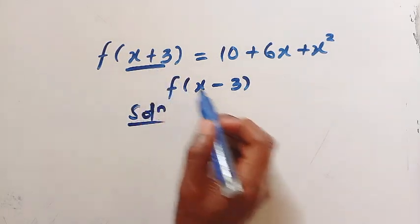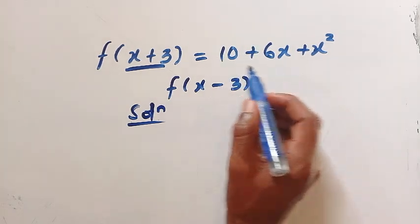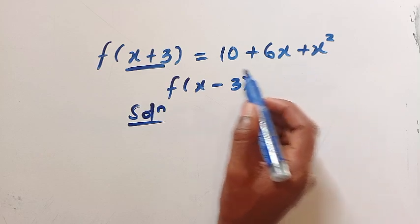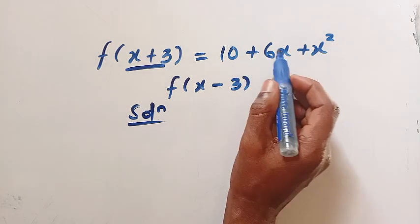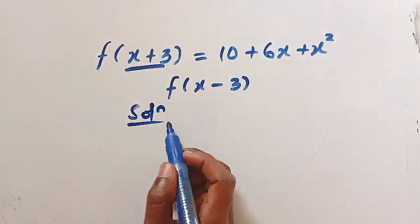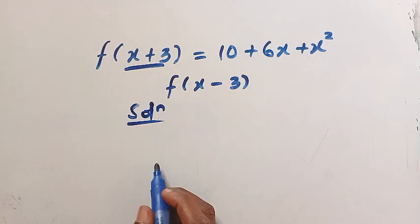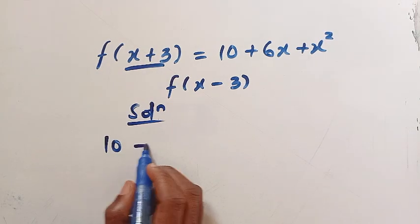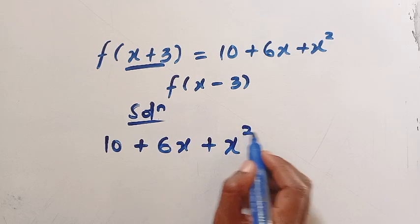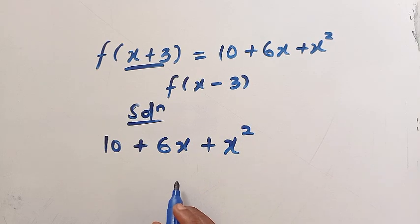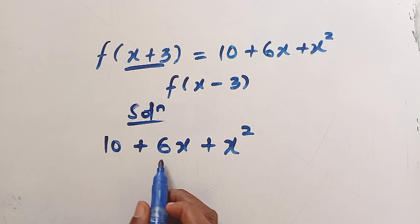Looking at the right-hand side, we have a quadratic — we have the power of 2 here as x squared, so here is the coefficient of x and here is the constant term. Let's try and factorize this. We have 10 plus 6x plus x squared — is this factorable? Looking at the middle term which is 6 and the constant term which is 10.